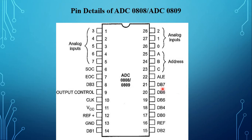Some important characteristics of the ADC: clock frequency range is 10 to 1280 kilohertz. Conversion time is 100 microseconds at 640 kilohertz. Maximum start pulse width is 100 nanoseconds. Minimum ALE pulse width is 100 nanoseconds. Resolution is 8-bit. Supply voltage is 5 volts.